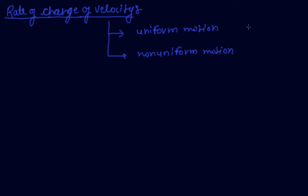In uniform motion, the object travels equal distance in equal time, so the velocity remains constant. Velocity is displacement traveled upon time, and this remains constant.